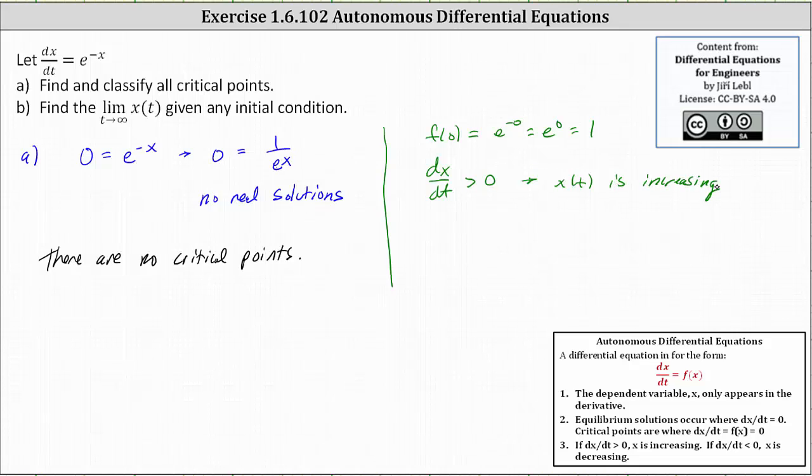Knowing this will help us determine the limit. So now for part B, if x(t) is always increasing or increasing without bound, the limit as t approaches infinity of x(t) approaches infinity, which really means the limit doesn't exist.